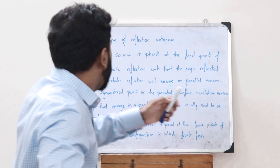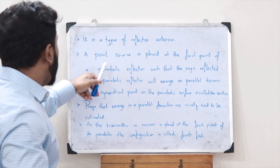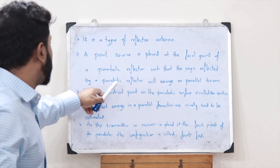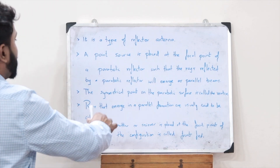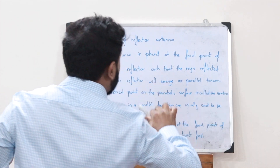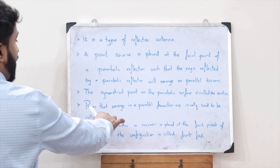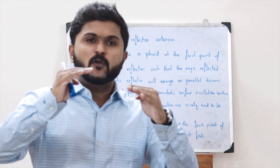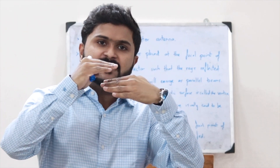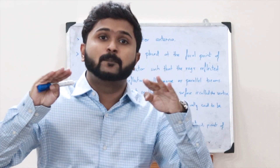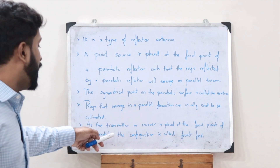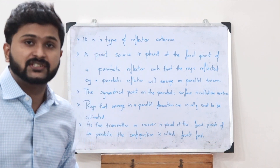To summarize: a parabolic dish antenna is a type of reflector antenna where a point source is placed at the focal point of a parabolic reflector such that the reflected rays emerge as parallel beams. The symmetrical point on the parabolic surface is called the vertex. The rays that emerge in a parallel formation are said to be collimated, meaning they are precisely parallel and therefore will not spread.